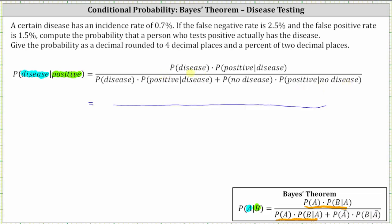In the numerator, we have the probability of disease, which is the incidence rate of 0.7%, or as a decimal, 0.007. Then we multiply by the probability of testing positive given they have the disease. This equals 100% minus the false negative rate: 100% minus 2.5% equals 97.5%, or as a decimal, 0.975. In the denominator, we again have 0.007 times 0.975.